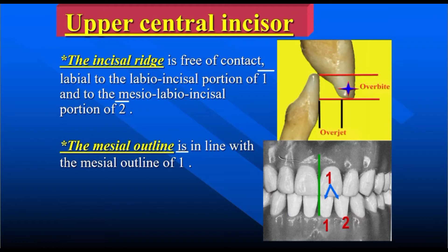The lingual cusp is in contact with the buccal cusp of the lower teeth — this is the basic principle. For the lower teeth, all the lingual cusps — lower first premolar, first molar, second molar, third molar — are free of contact. But the incisor edge of the lower central and lateral incisor and the cusp of the canine are in engagement with the opposite tooth.